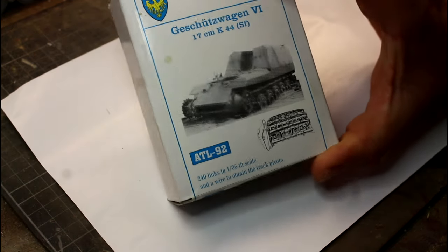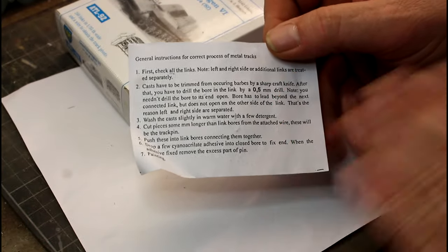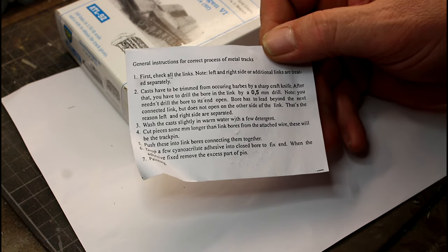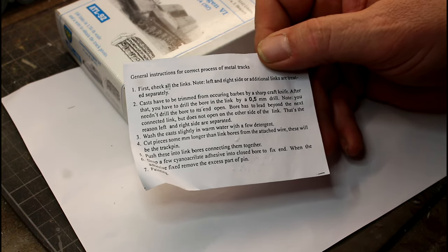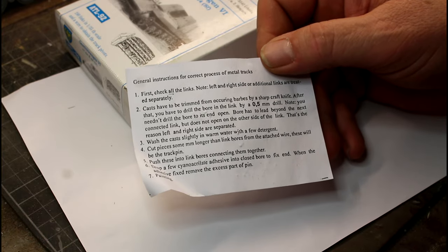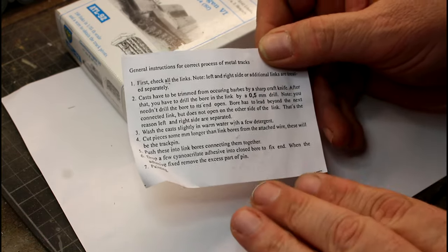They normally come just in a box like this, in a pack, and they're made for one specific piece of armor normally. Inside we have the first thing, your little list of instructions here. The instructions are very basic, just gives you cleaning up the tracks, drilling the hole. You need a 0.5 millimeter drill to drill the holes out, which is the small little tiny needle drills that we use in modeling. Sometimes you need it, sometimes you don't, but it's best to run that drill through to make sure that the eyelets are open to put the wire through.